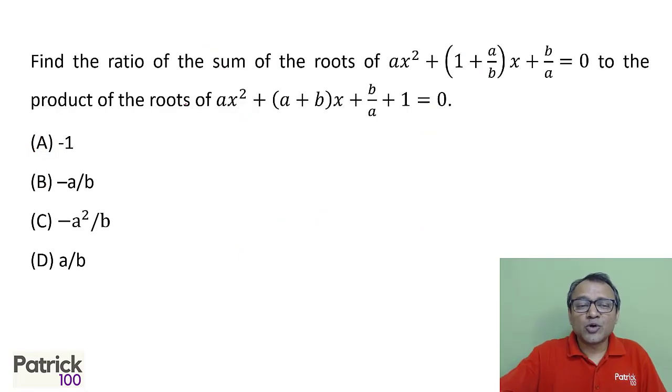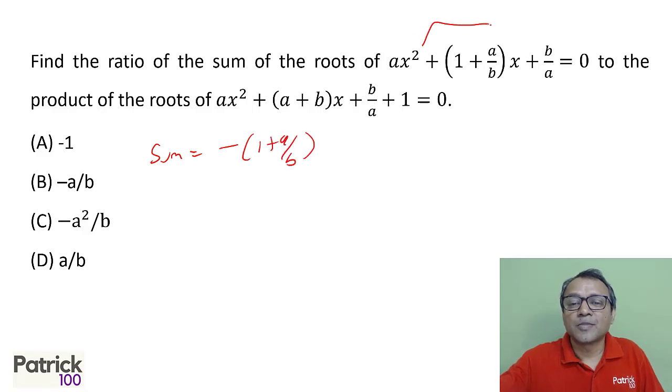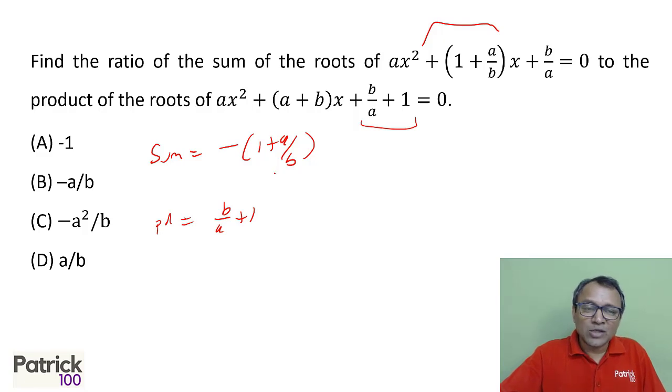Sum of the roots, product of the roots. You can make out that sum of the roots here, if you look at it in the first equation is minus 1 plus a upon b. Product of the roots in second part is nothing but b upon a plus 1. You can normally divide and solve that is okay.